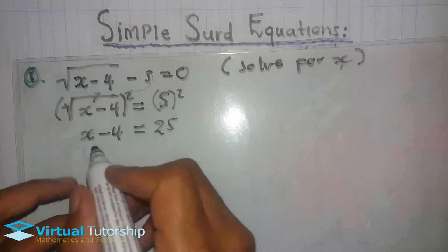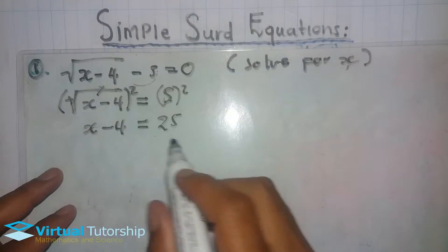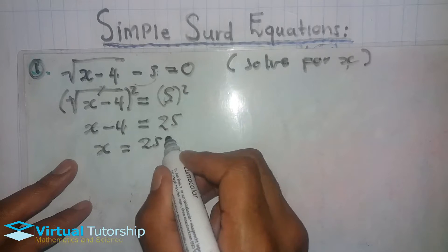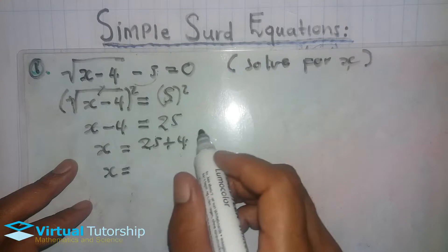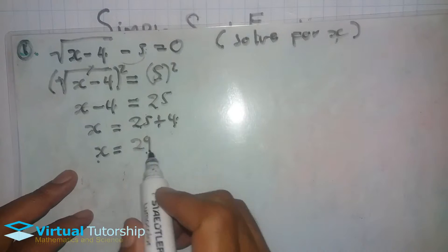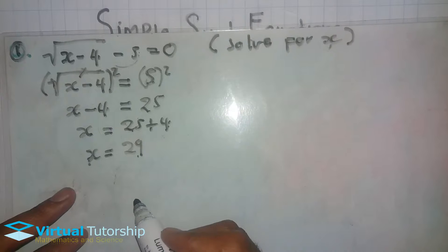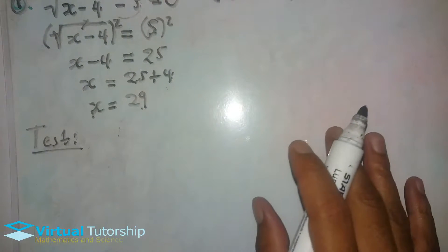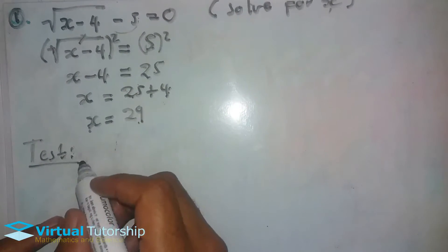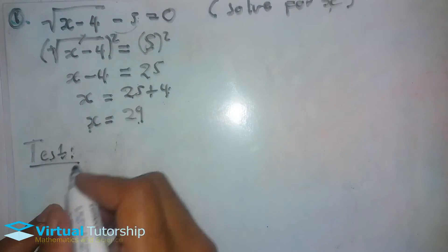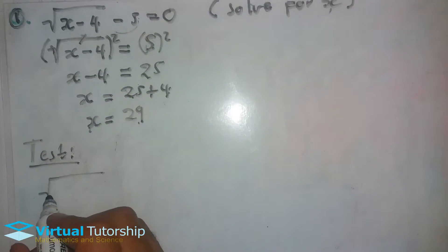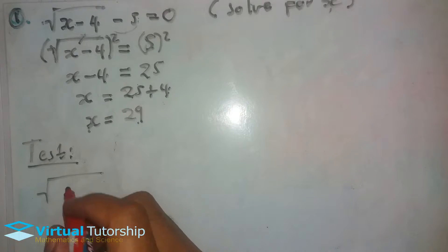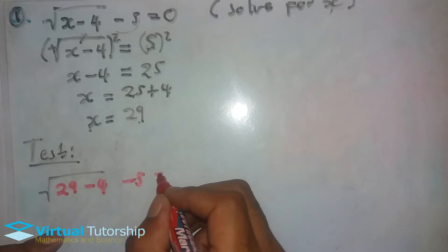Now we have a linear equation: x minus 4 equals 25. We move the x to one side and the number to the other side. So x equals 25 plus 4, which gives us x equals 29.